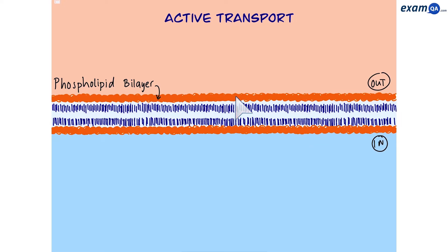So we have the inside of the cell and the outside. We know molecules can go through the cell membrane in different ways. In this video we're going to be focusing on specifically active transport.